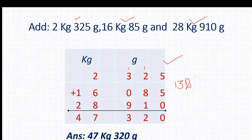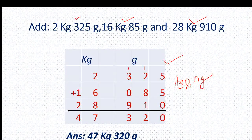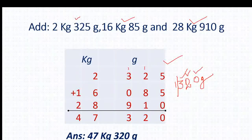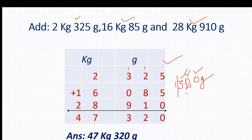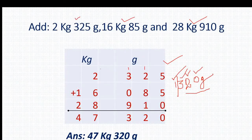So it will be 1320 gram. Children, as you all know, 1320 gram — the first three places stand for gram, so here you can see 320 gram, and this 1 is for kg. So 320 gram is written here and 1 will be added to the kg column.